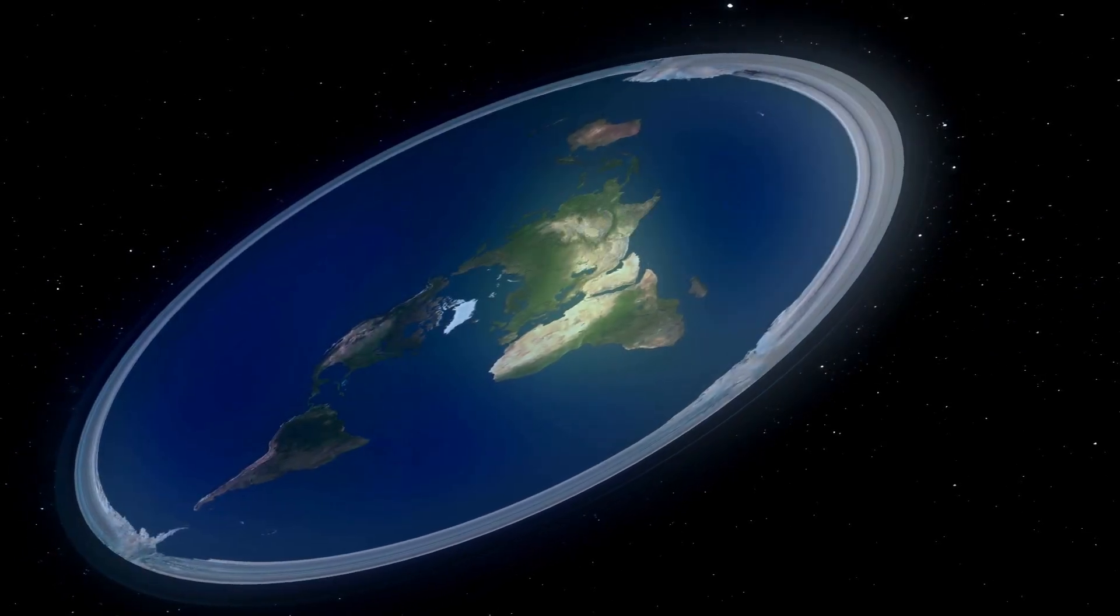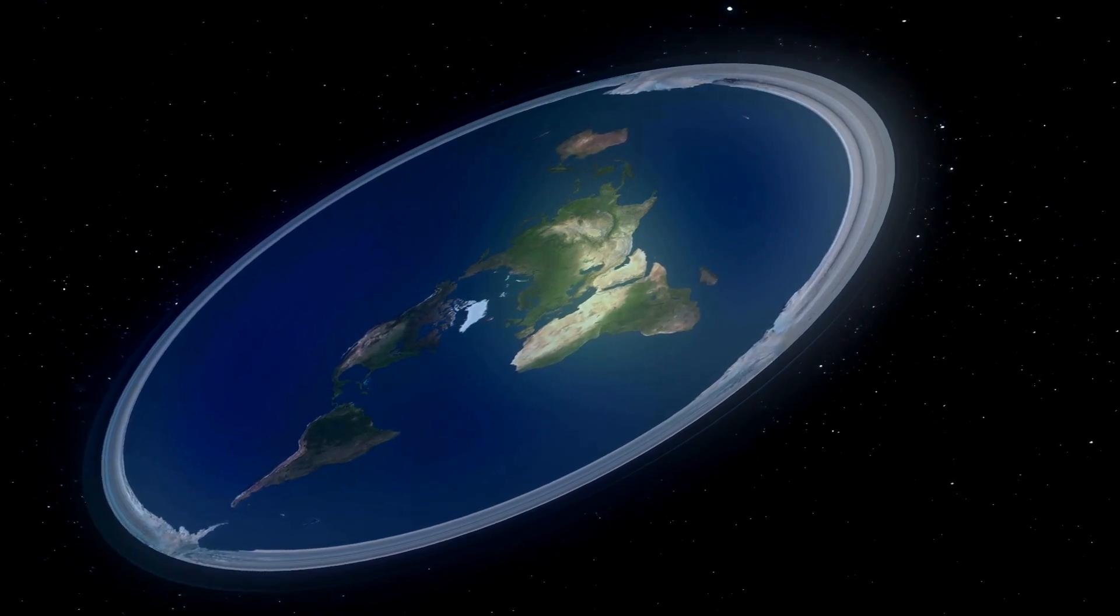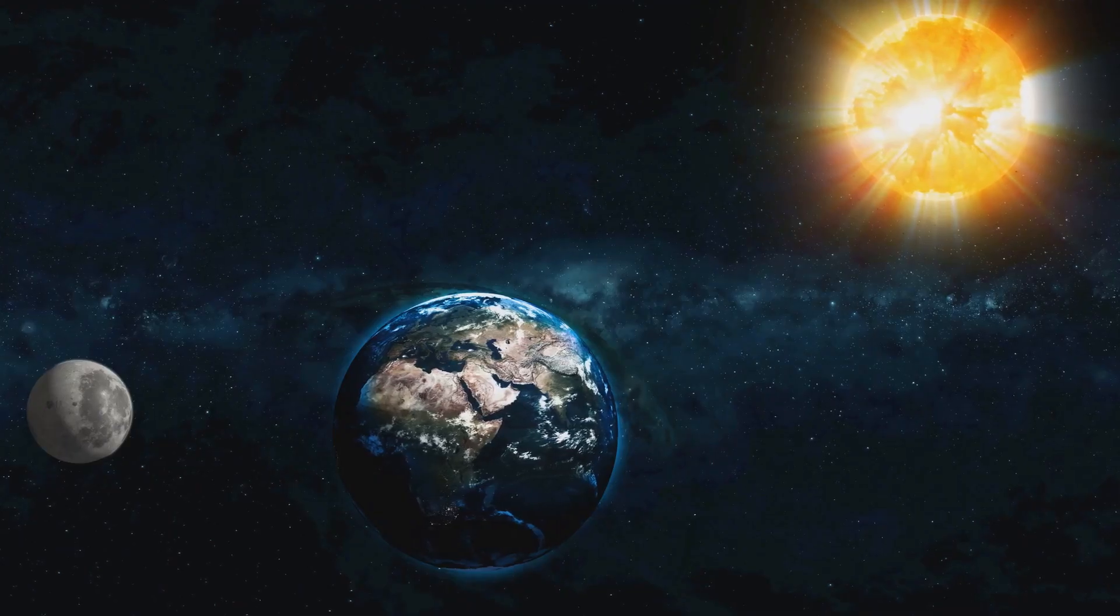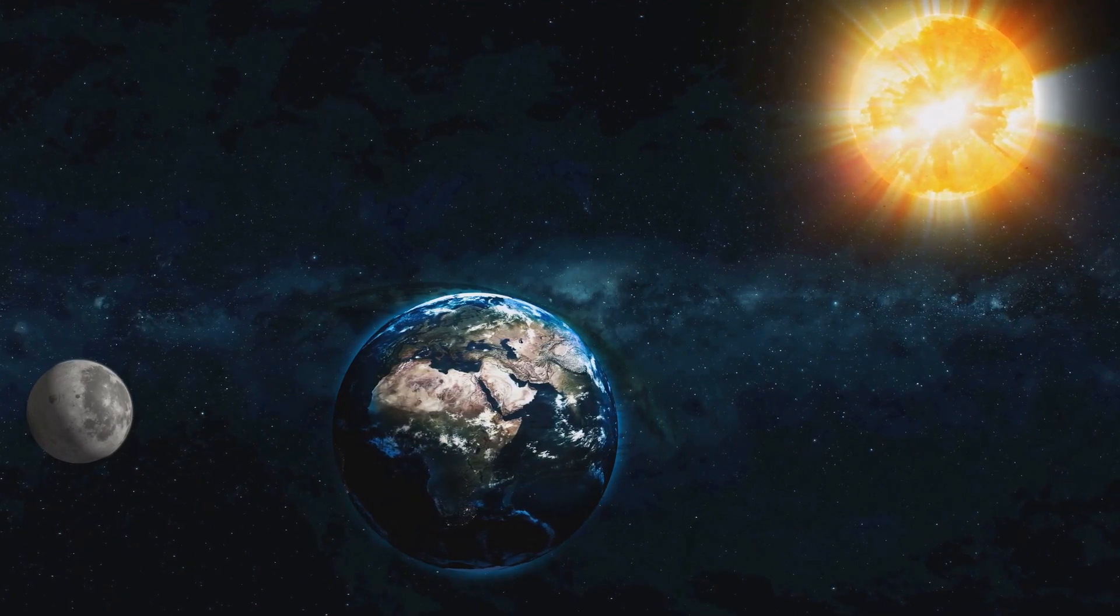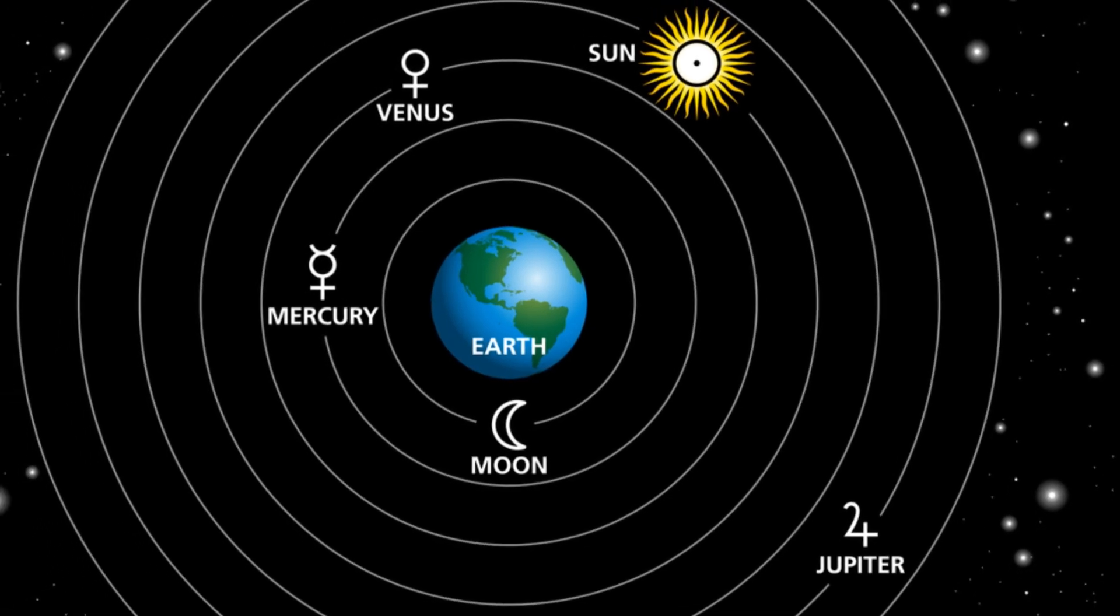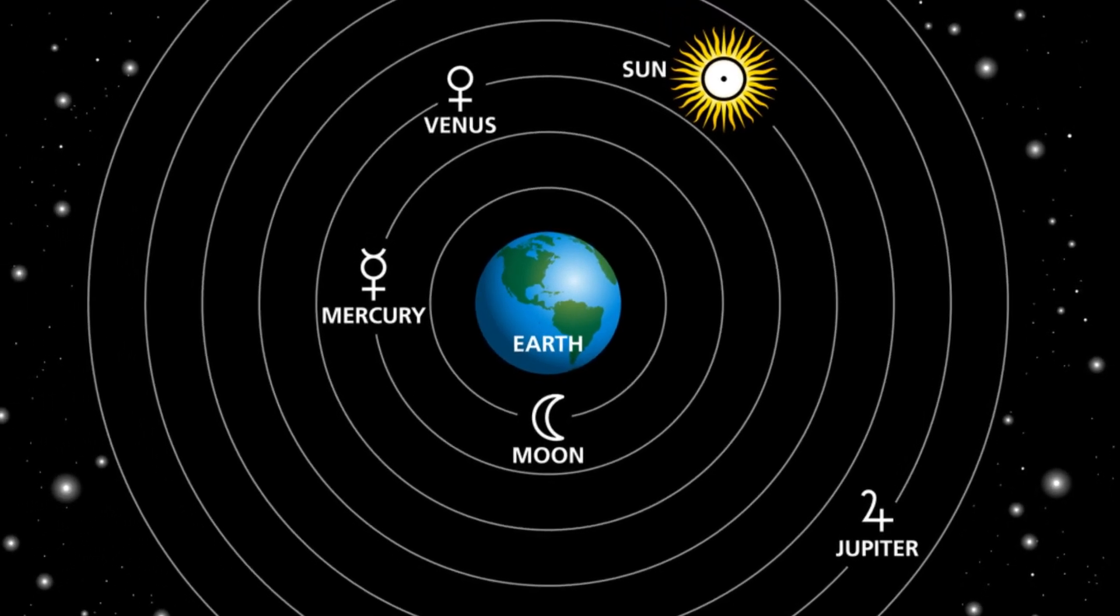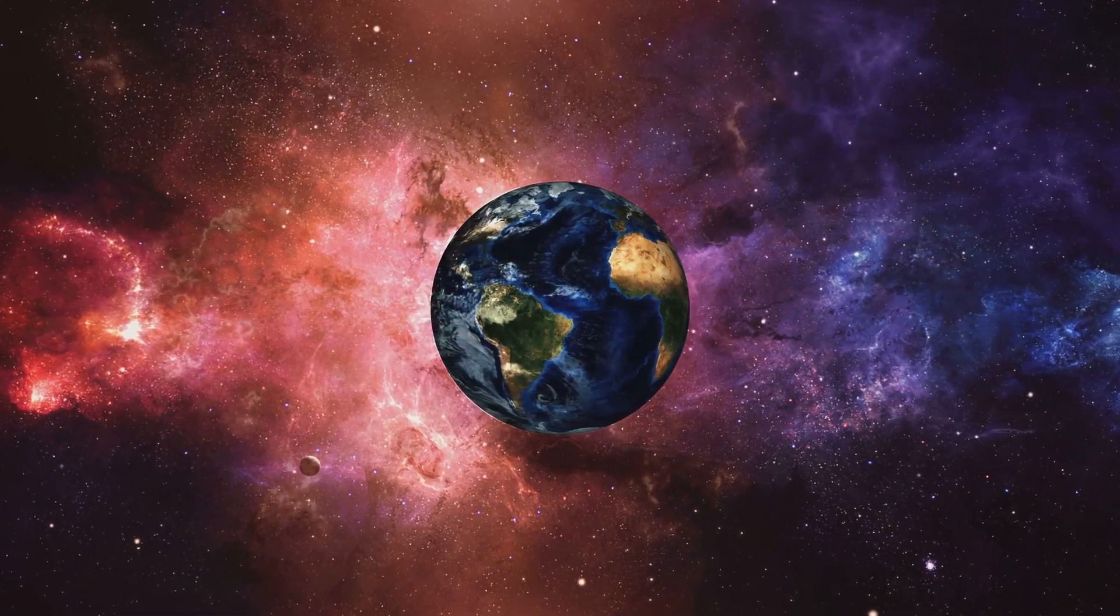Early civilizations often envisioned the earth as a flat disk surrounded by a dome-like sky. The sun, moon and stars were thought to be celestial objects embedded in this rotating sphere. This geocentric model of the universe with Earth at its center persisted for centuries. However, ancient Greek astronomers began to challenge this view.